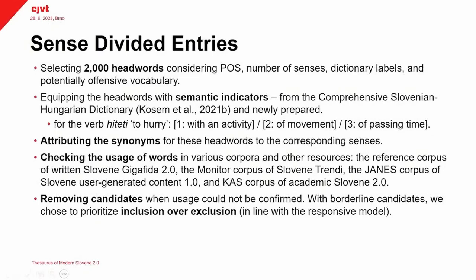All of these novelties are described in the paper, but as promised I would like to focus a little bit on sense-divided entries and how we prepared those. We selected 2,000 headwords, considering their part of speech, the number of senses, dictionary labels, and we were also interested in potentially offensive vocabulary — why, I will explain on the next slide. We then equipped these headwords with semantic indicators.